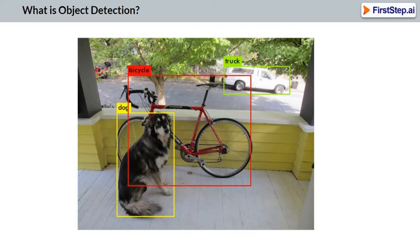Simply put, object detection is the ability to detect and name objects in an image. We do this every day as humans, but computers really struggle with this. Object detection can apply to a static photo, a video feed on your mobile device, or even a CCTV video stream.